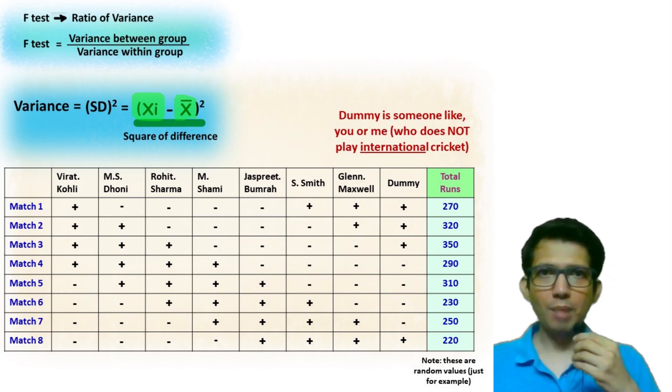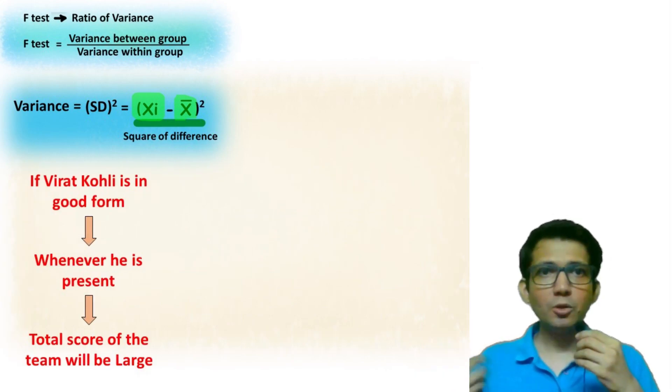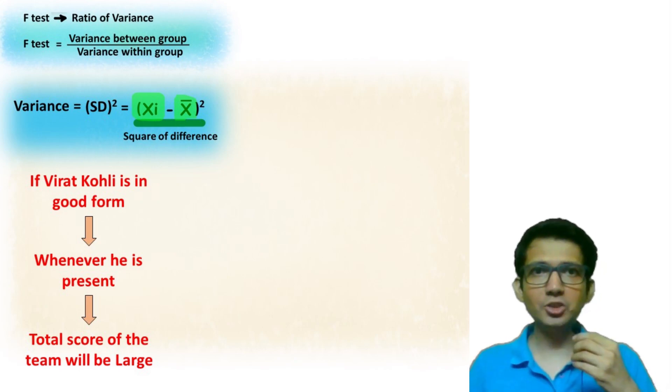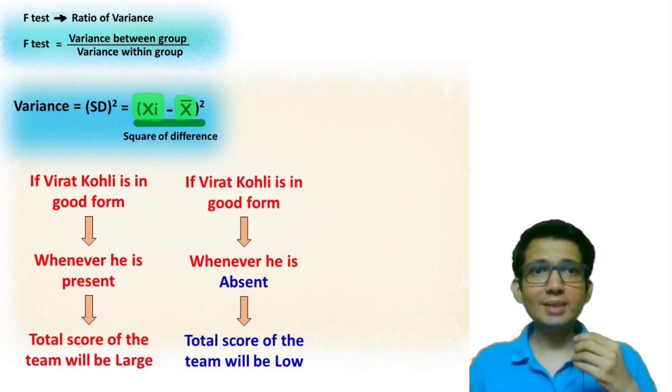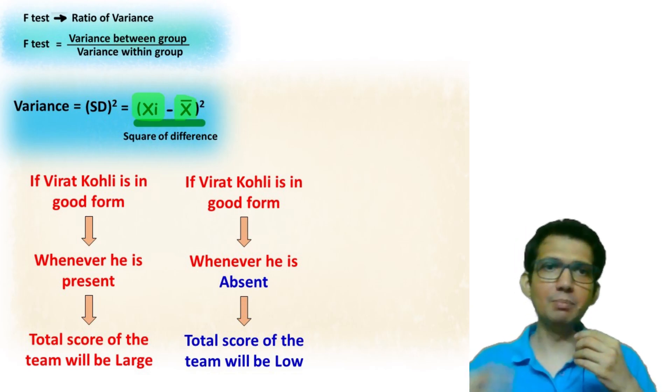Now comes the important part. If a player is in good form, then whenever this player is present, the total score of the team will be large. And if a player in good form is absent, then it is possible that the total score of the team will be less.